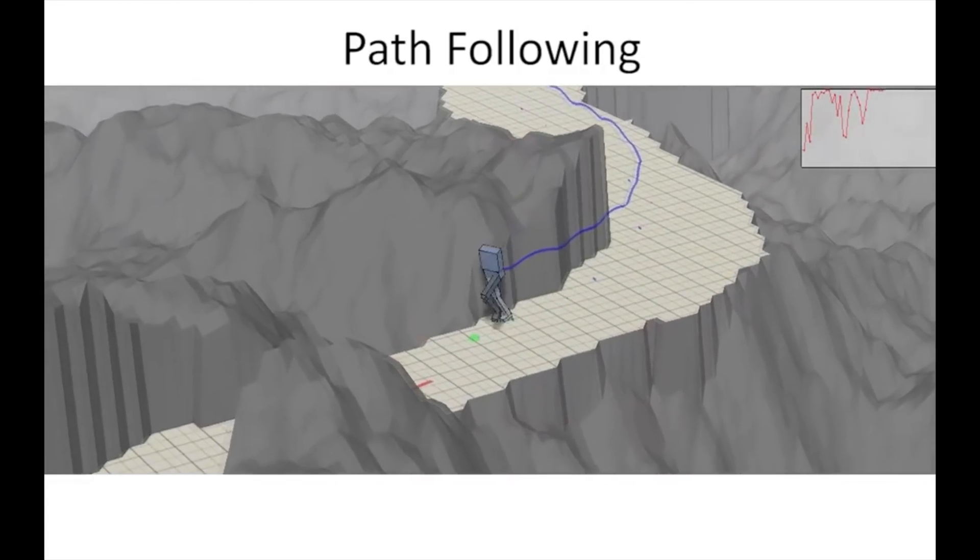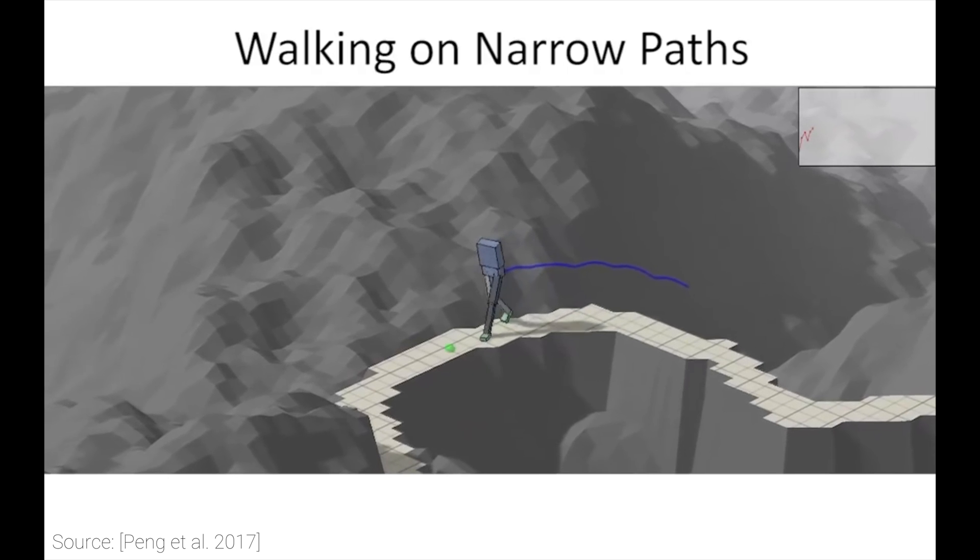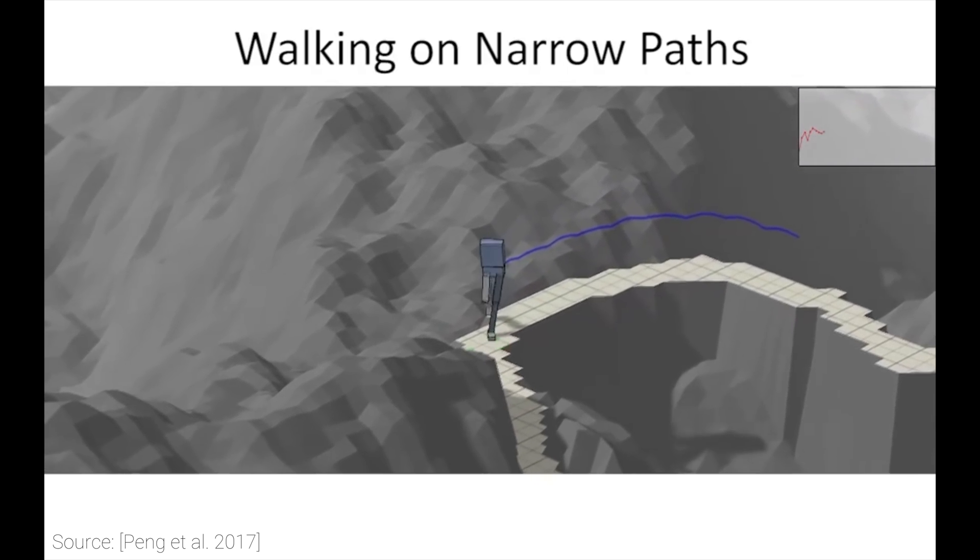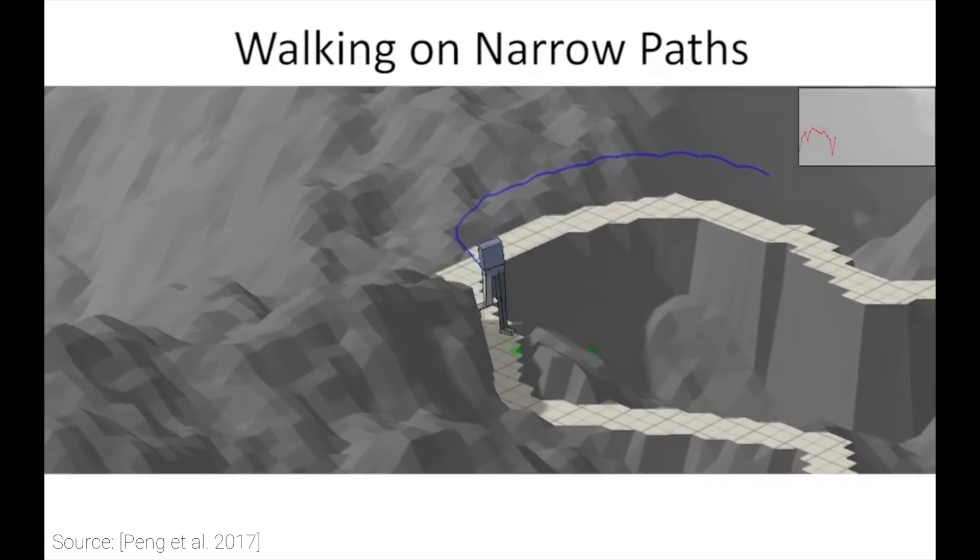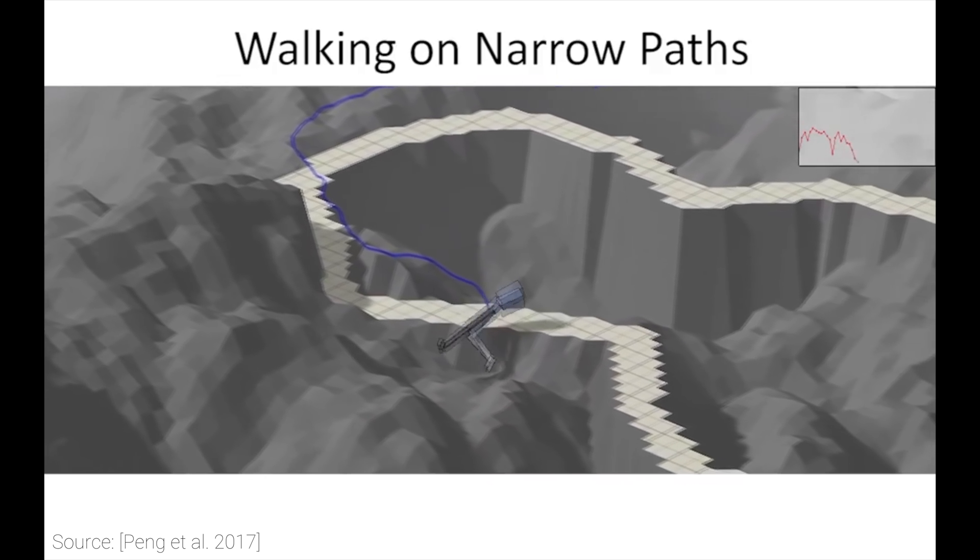Earlier, we have talked about a few amazing algorithms to teach digital creatures to walk. And this time, we are interested in controlling the joints of a digital character to not only walk properly, but take into consideration its surroundings.